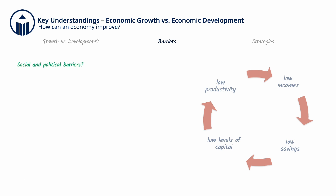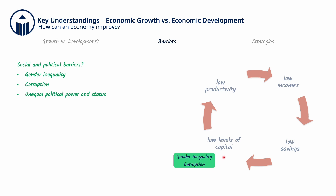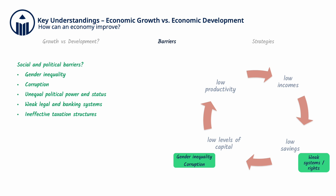Moreover, there are social and political barriers to growth and development, like gender inequality, a lack of good governance and high levels of corruption, as well as unequal political power and status, all of which trap the country in the low levels of capital poverty cycle. When women's well-being is suppressed or deprioritized, it also affects the health care and education of their children, and so leads to lower levels of human capital for future generations. High levels of corruption deter savers and investors, contributing to low levels of financial and physical capital. Weak legal and banking systems and ineffective taxation structures lower the availability of funds needed for investment in pro-development projects. Many LEDCs also suffer from having weak property rights that deter investors who fear losing their investments.